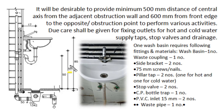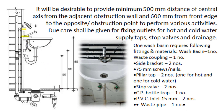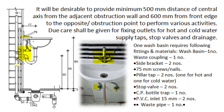For wash basins (except corner-placed ones), it is desirable to provide a minimum 500 mm distance from the central axis to any adjacent wall or obstruction, and 600 mm clear space in front for performing various activities. Due care shall be given for fixing hot and cold water outlets; mixers can be used for convenient temperature control. Apart from required taps, stop valves and a suitable drainage system connection should be provided.